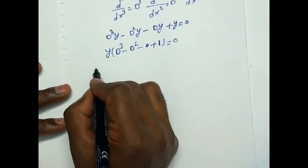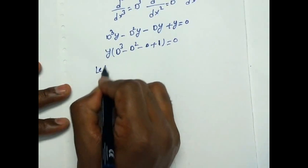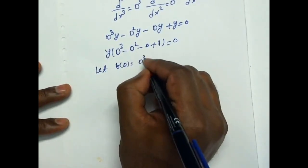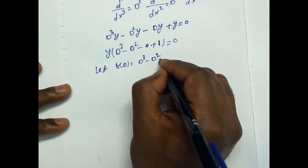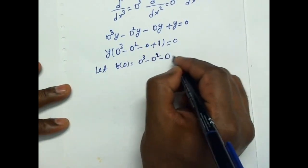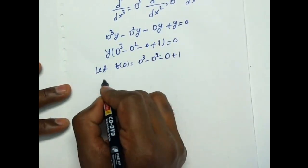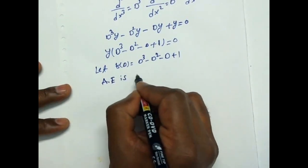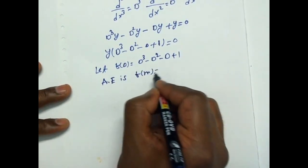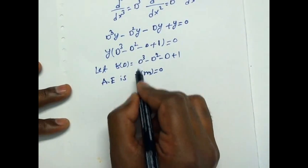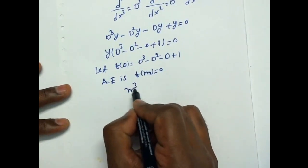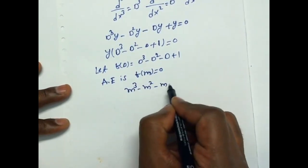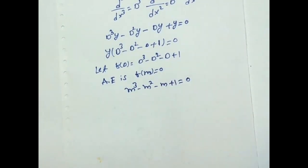Let F(D) equal D³ minus D² minus D plus 1. The auxiliary equation is F(M) equals 0, so M³ minus M² minus M plus 1 equals 0.